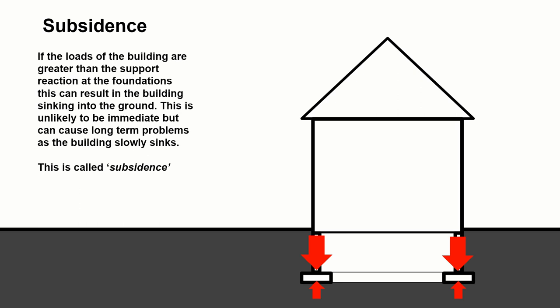It can happen evenly. More often than not, one side of the building will sink to a greater degree than another and it will start to tilt. And this can cause significant problems and is actually quite difficult to fix.